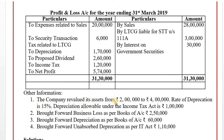The company revalued its assets from Rs. 2 lakhs to Rs. 4 lakhs. The rate of depreciation is 15%. For Step 1, depreciation other than revaluation is considered. Depreciation allowable under Income Tax Act is deducted. Brought-forward business losses as per books of account and brought-forward unabsorbed depreciation as per Income Tax Act of Rs. 1 lakh 10,000 are also considered in calculating income from business.